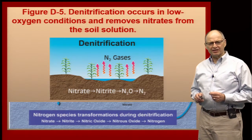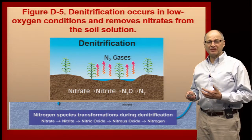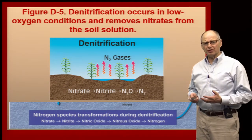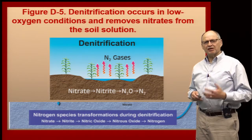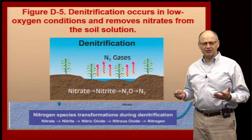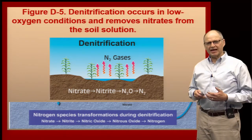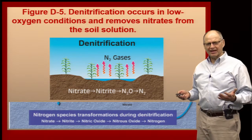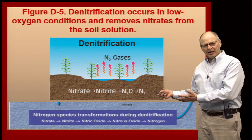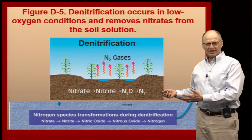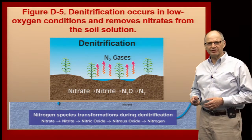Denitrification is a process that doesn't happen that much in Nebraska, especially during drier periods. But we have times in the spring, and places in the landscape where water will collect, and whenever we have water sitting in saturated soils for more than two or three days, we create anaerobic conditions — meaning there's no oxygen. Microbes then use nitrate as an energy source and break it down, and it ends up going into the atmosphere as N₂. This isn't a major loss mechanism for us, but farther east — in Illinois, Indiana, Pennsylvania — where they have much wetter springs, denitrification is a bigger problem. There are still situations in our landscape where it might occur in some years.